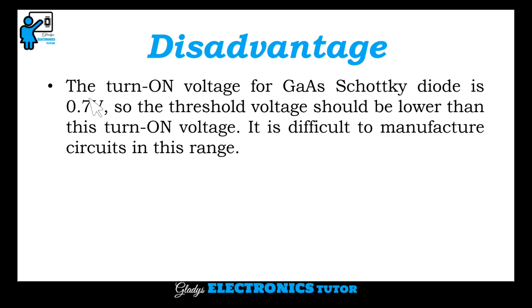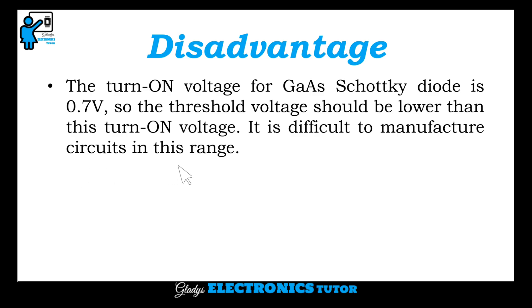The disadvantage is that the turn-on voltage for gallium arsenide Schottky diode is 0.7V, so the threshold voltage should be lower than this turn-on voltage. It is difficult to manufacture circuits in this range.